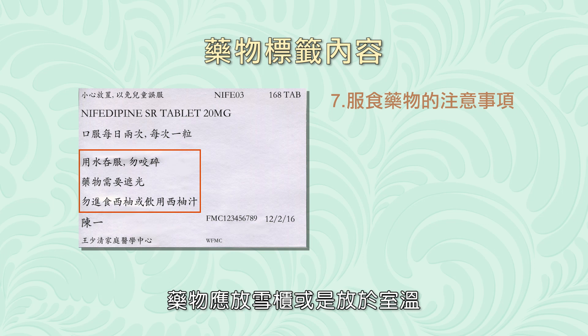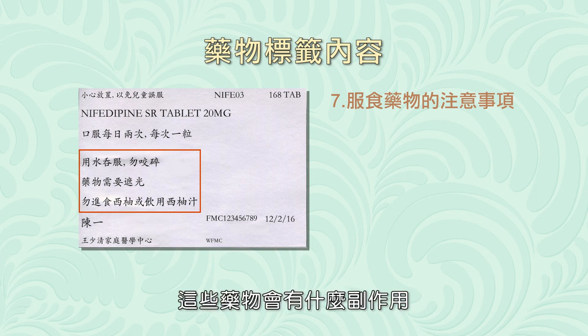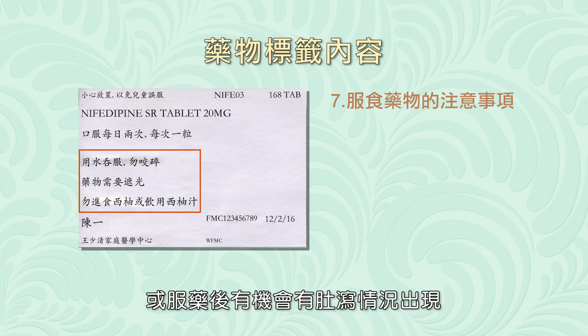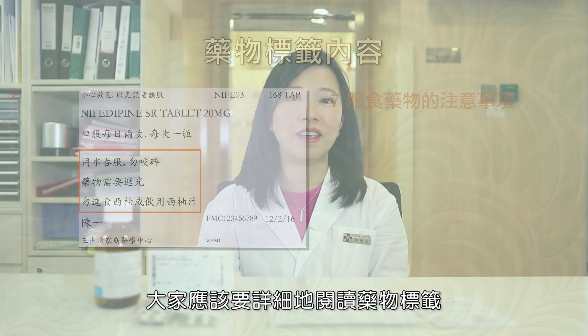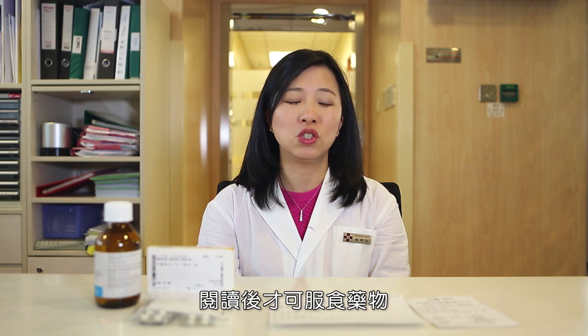這個日期可以告訴大家究竟在哪個時候長者拿到這些藥物。最後會印有一些服食藥物的注意事項，例如應該怎樣服食藥物，是整顆吞還是應該咬碎才吃，又或者是怎樣把藥物儲存，應該放在雪櫃還是放在室溫。也有提示告訴長者這些藥物有什麼副作用，例如吃了藥之後可能會引起睡意，又或者有機會出現嘔吐情況。大家應該詳細地閱讀藥物標籤，閱讀完之後才去服食藥物。